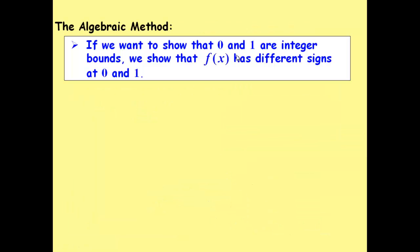So, if we want to show that 0 and 1 are integer bounds, we show that f of x has different signs at 0 and 1.